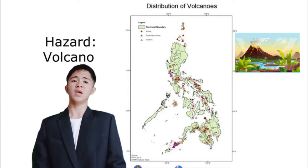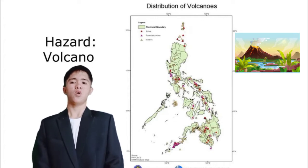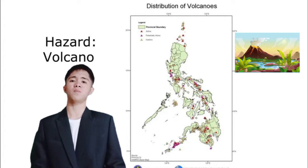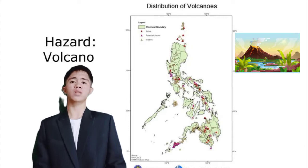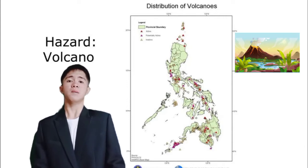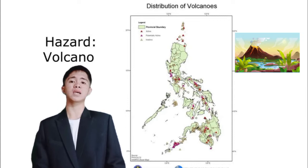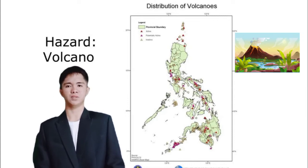The authorities are reminding them to be ready at all times. In Camarines Norte, we have Mount Labo, but luckily this volcano is only potentially active, meaning it is morphologically similar but has no historical or analytical records of eruption.